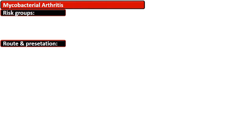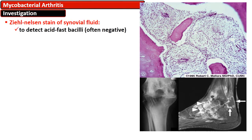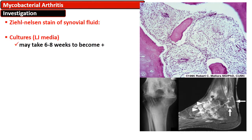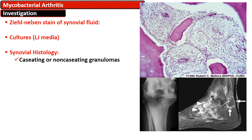The pathology of mycobacterial arthritis involves the synovium. To investigate, Ziehl-Neelsen stain detects acid-fast bacilli in the smear. Culture on Löwenstein–Jensen media can take about 6 to 8 weeks to become positive. Synovial histology is characteristic, showing caseating granulomas composed of numerous giant cells in which the nuclei are arranged in a horseshoe pattern, termed Langhans giant cells. Caseating necrosis is also seen.